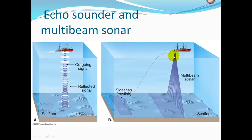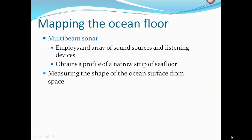With multi-beam sonar, they can send out a whole swath of sonar beams and measure a whole swath as they travel. They can also carry a side-scan towfish to send out sonar signals for more rapid bathymetry mapping. Multi-beam sonar employs an array of sound sources and listening devices, obtaining a profile of a narrow strip of seafloor and measuring the shape of the ocean surface.